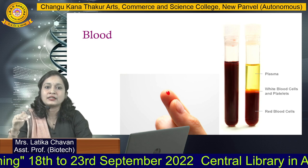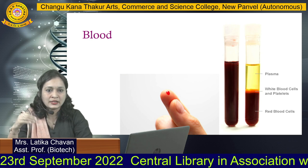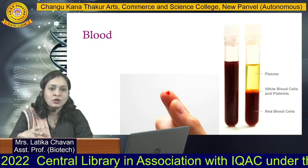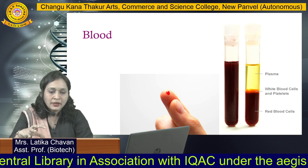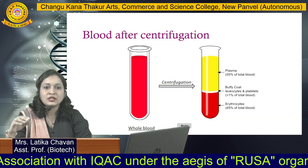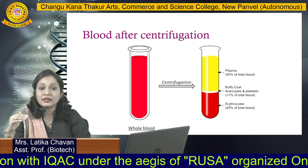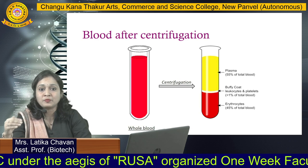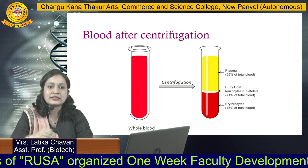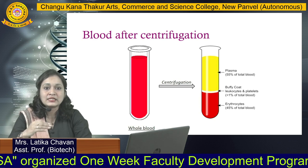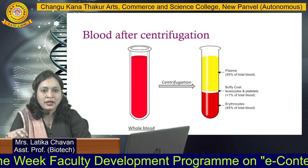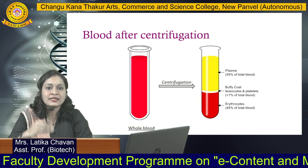Blood is basically a fluid connective tissue present in our body. It is composed of blood cells as well as a water portion called plasma. The cellular components are RBCs, WBCs, and platelets. Approximately 55% is the water portion — plasma. If you centrifuge whole blood you can separate blood cells from plasma.